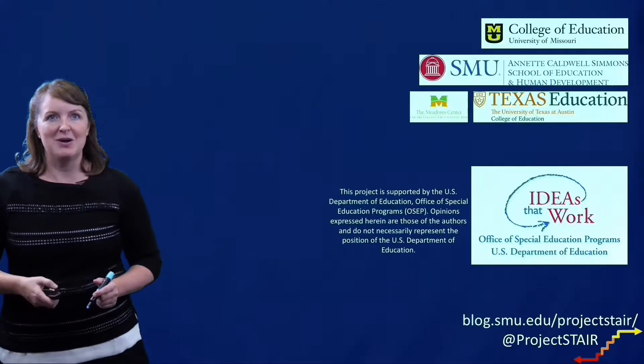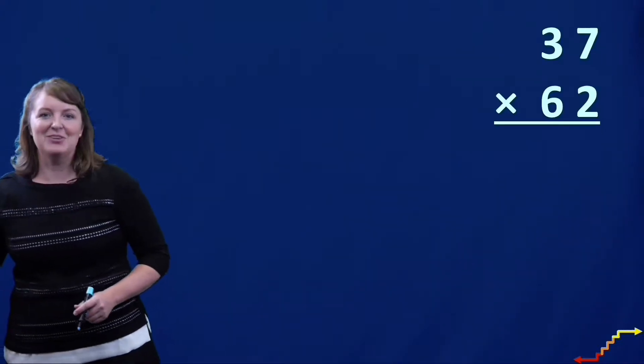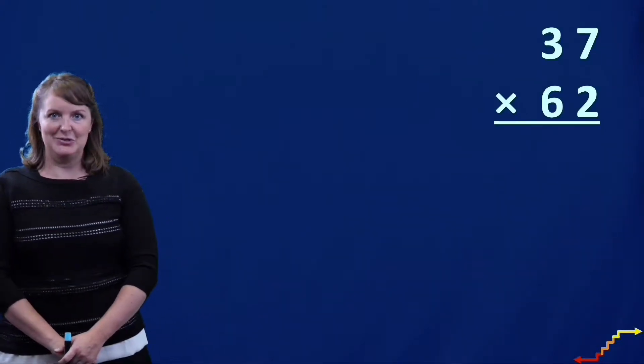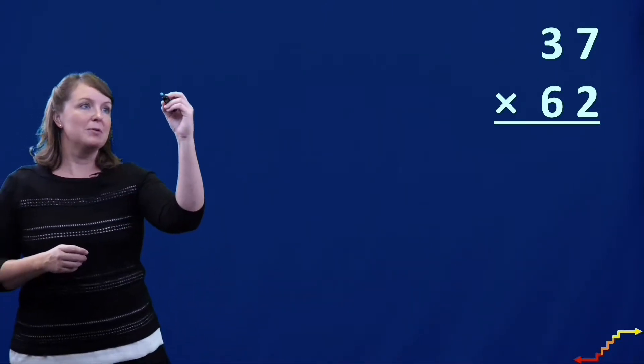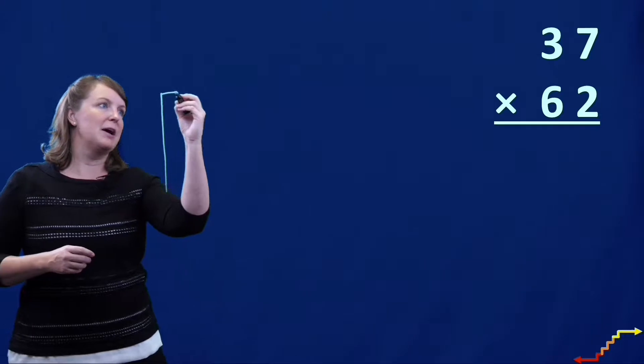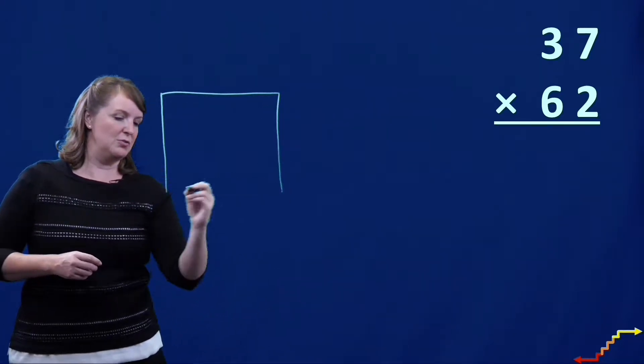So we have a multiplication problem here. Whoa, there we go. 37 times 62. Now, this is a two-digit factor multiplied by another two-digit factor. So with my area model, I'm going to set up two columns and two rows.